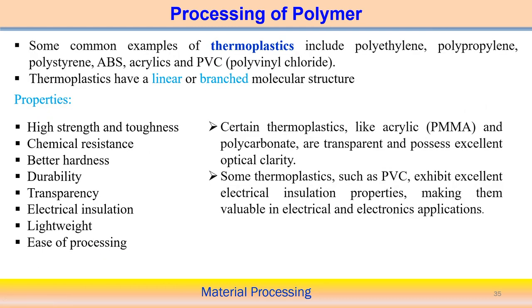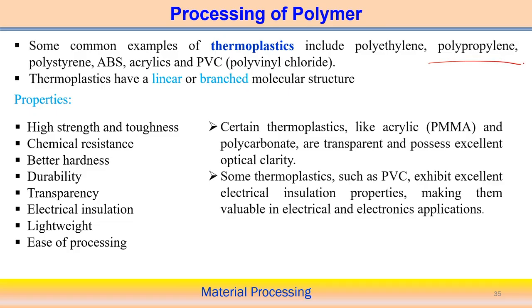Some common examples of thermoplastics include polyurethane, polypropylene, ABS, acrylics, and PVC (polyvinyl chloride). Thermoplastics have a linear or branched molecular structure, which is different from that of thermosets.